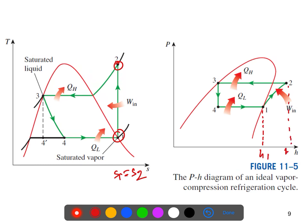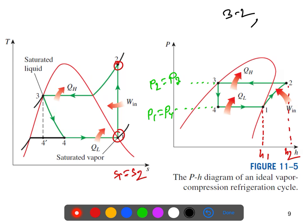The enthalpy is changing because during an isentropic change the temperature increases, so enthalpy increases from state 1 to state 2. From 2 to 3, the temperature decreases due to heat rejection to the warm surface. At points P2 and P3 the pressure is constant, and similarly P1 and P4 are constant — this is constant pressure heat rejection and constant pressure heat absorption.